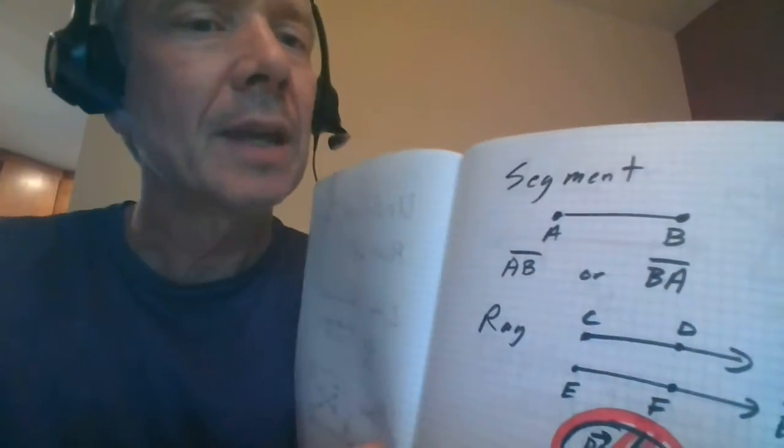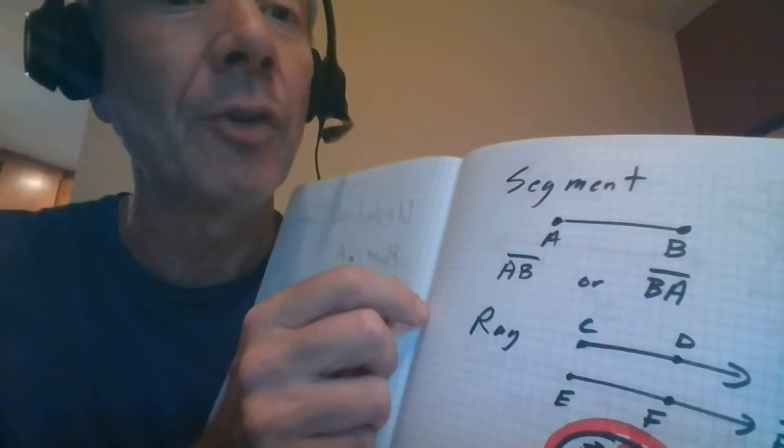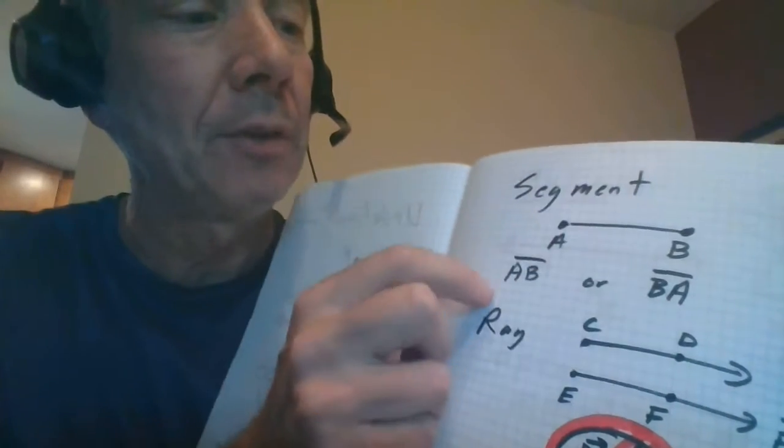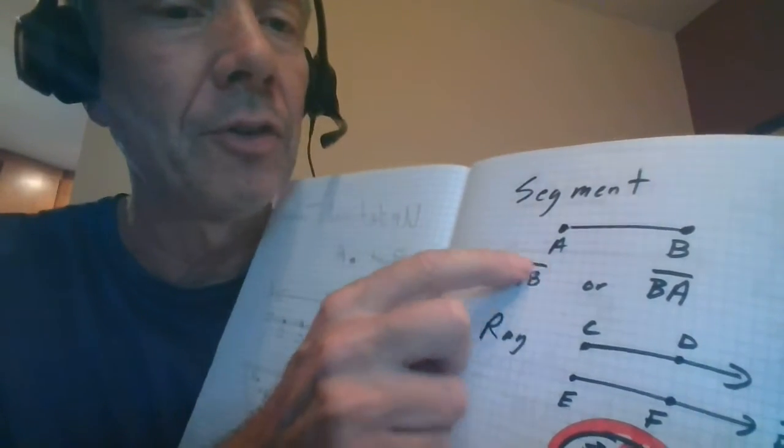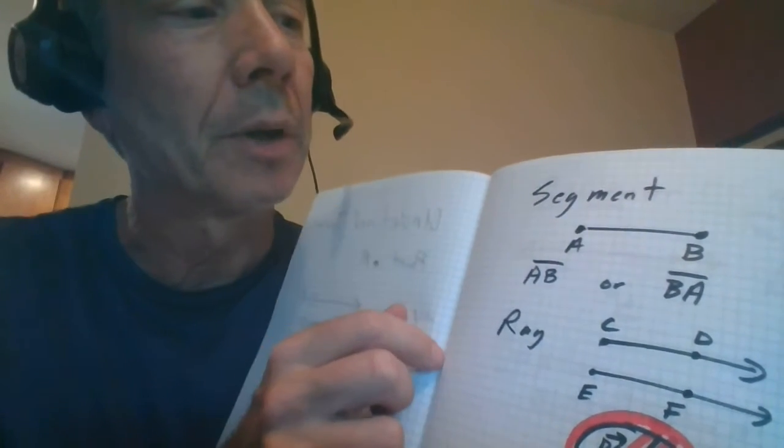Segment. Segment is simply a portion of a line. Again, line goes on forever. Segment has a beginning and an end, so it has some length. The endpoints, these are called endpoints, so I can call this AB, notice no arrows over the top. Or BA, no arrows. Once again, it doesn't matter which one comes first.